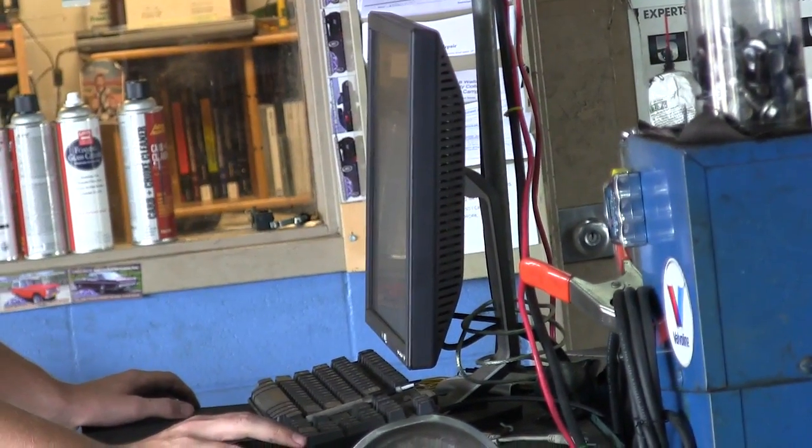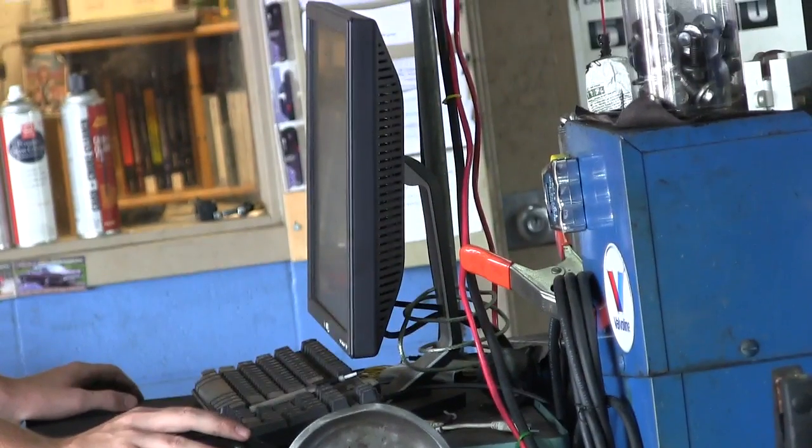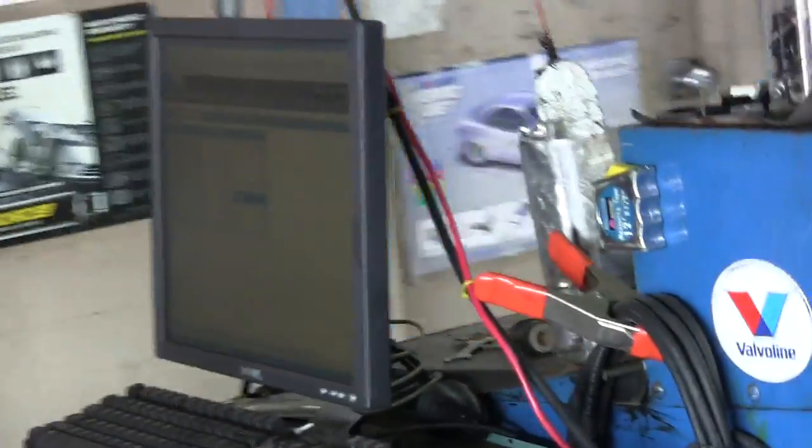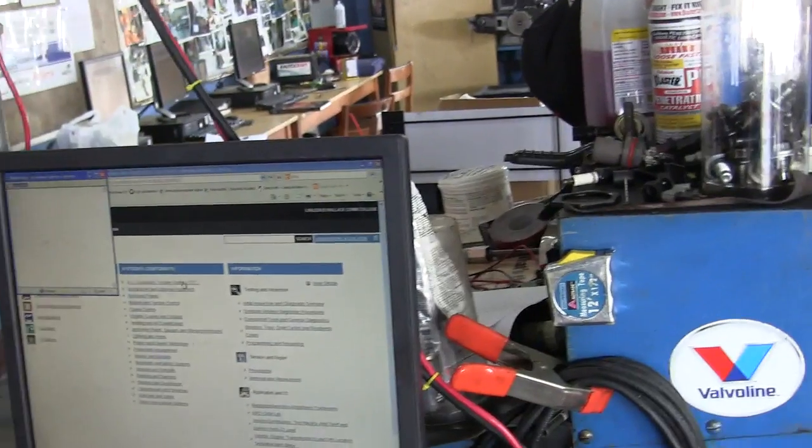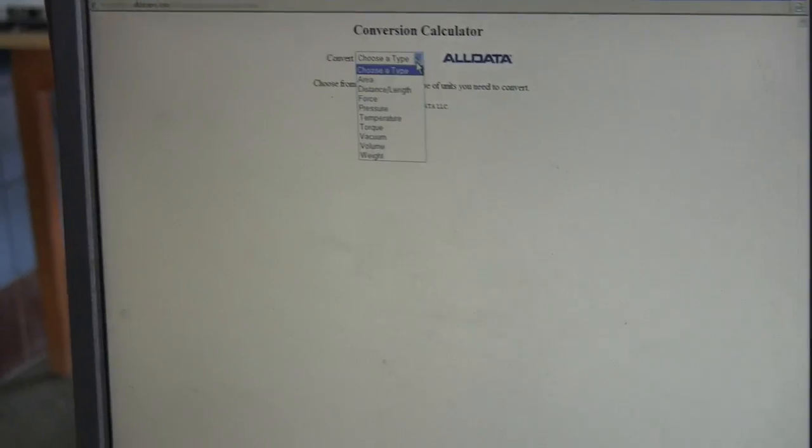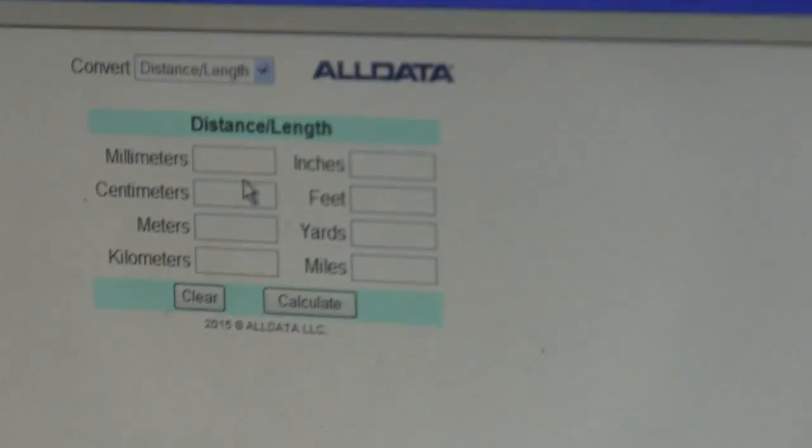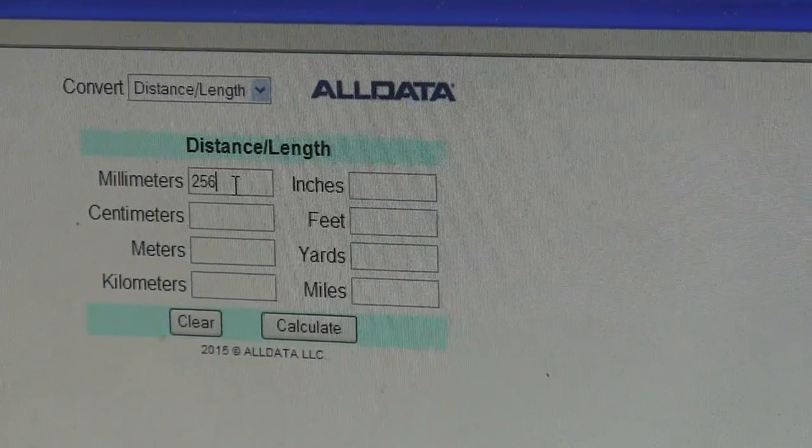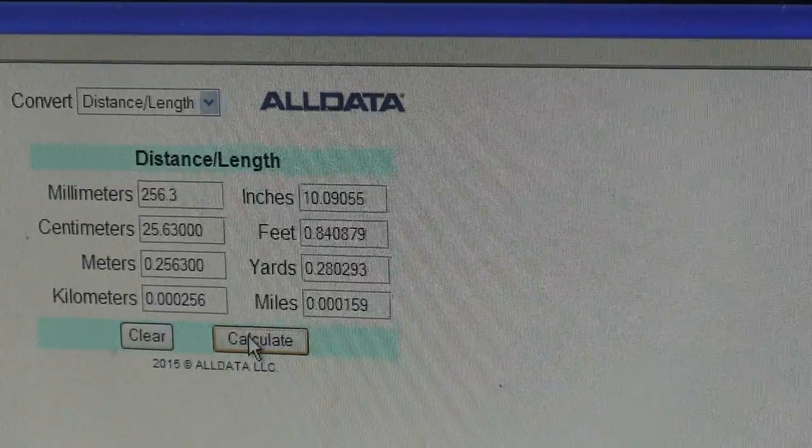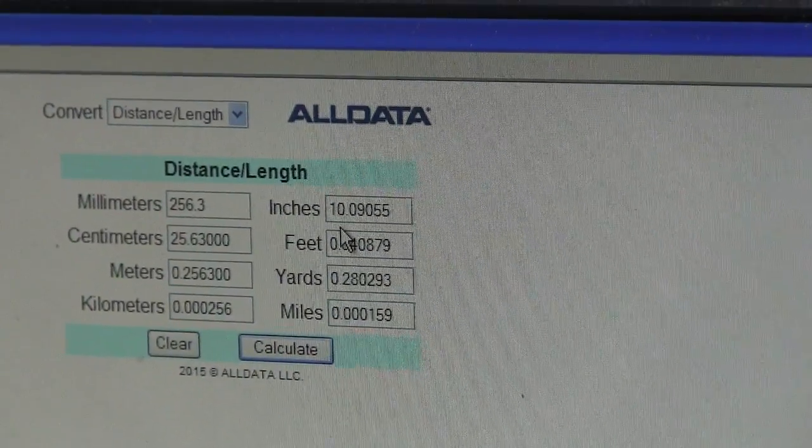What about it, Dustin? What are you seeing on your conversion calculator? Go to All Data and then up on the right-hand side when you select a vehicle, you'll see the conversion calculator. See the conversion calculator? Now we got 256.3. Calculate that. What's that for inches? 10.09055.